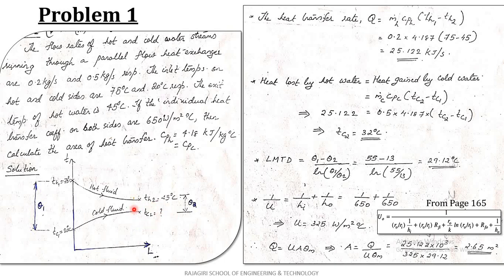To find Tc2, apply the energy balance equation between hot and cold fluid. Heat loss by the hot fluid is Mh·Cph·(Th1 − Th2), and that equals the heat gain by the cold fluid: Mc·Cpc·(Tc2 − Tc1). By equating these two equations, you can find Tc2, since Mc, Cpc, Mh, Cph, Th1, Th2, and Tc1 are all given.